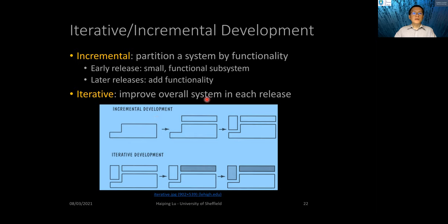Another is iterative development. Here, the objective is to improve the overall system in each release. For example, we already have all the components. In iterative development, for example, we may optimize this part first. And then, optimize this part next. That will give you an iterative development.